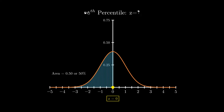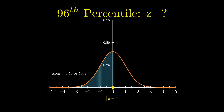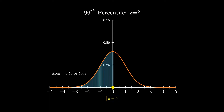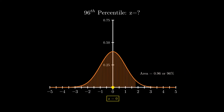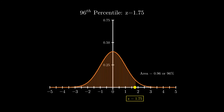Moving on to the 96th percentile, we find the value of z by drawing that area of the normal curve. We see that this area is greater than half of the normal curve, at 0.96. This corresponds to a z-value boundary of 1.75. Therefore z equal to 1.75 marks the boundary for the 96th percentile.